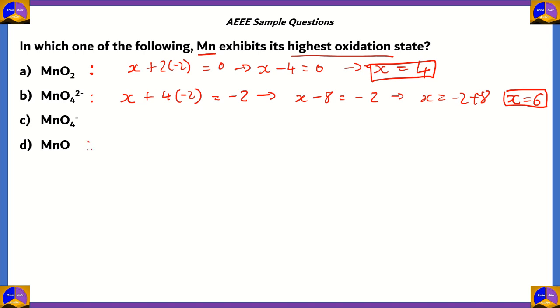How about MnO, manganese oxide? It'll be X plus minus 2, so that's X minus 2 equals 0, which means that X equals 2. So the oxidation state of manganese in MnO is plus 2.